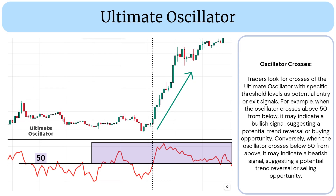Traders also look for crosses of the ultimate oscillator with specific threshold levels as potential entry or exit signals. When the oscillator crosses above 50 from below, it may indicate a bullish signal suggesting a potential trend reversal or buying opportunity. Conversely, when the oscillator crosses below 50 from above, it may indicate a bearish signal suggesting a potential trend reversal or selling opportunity.